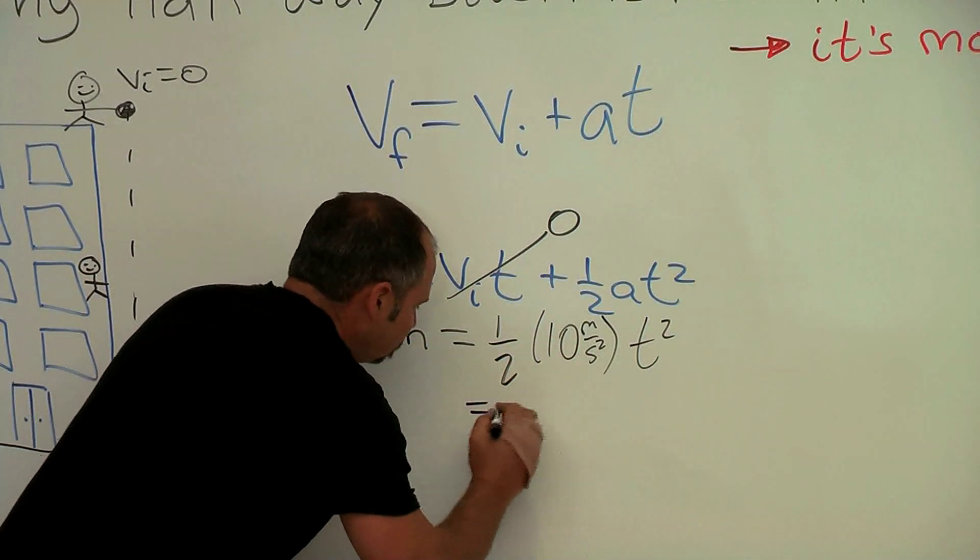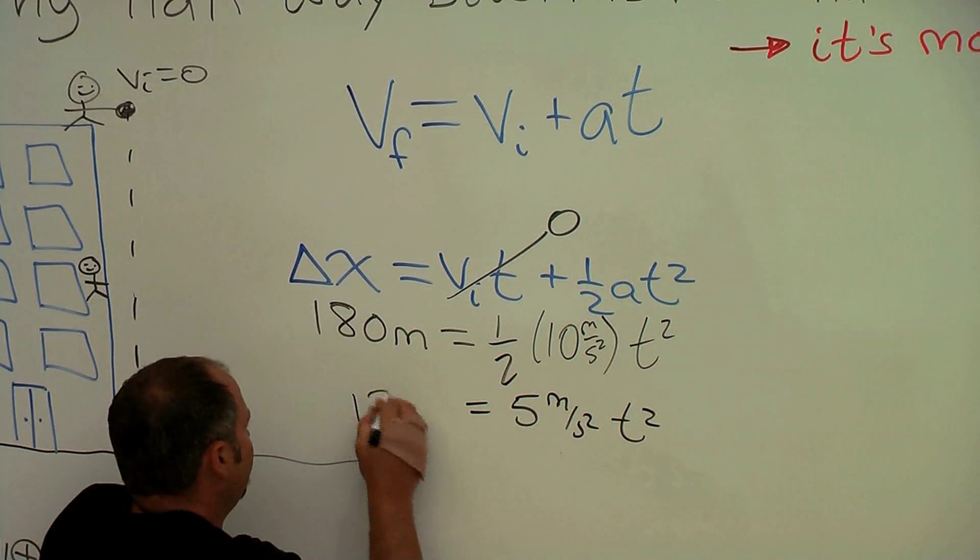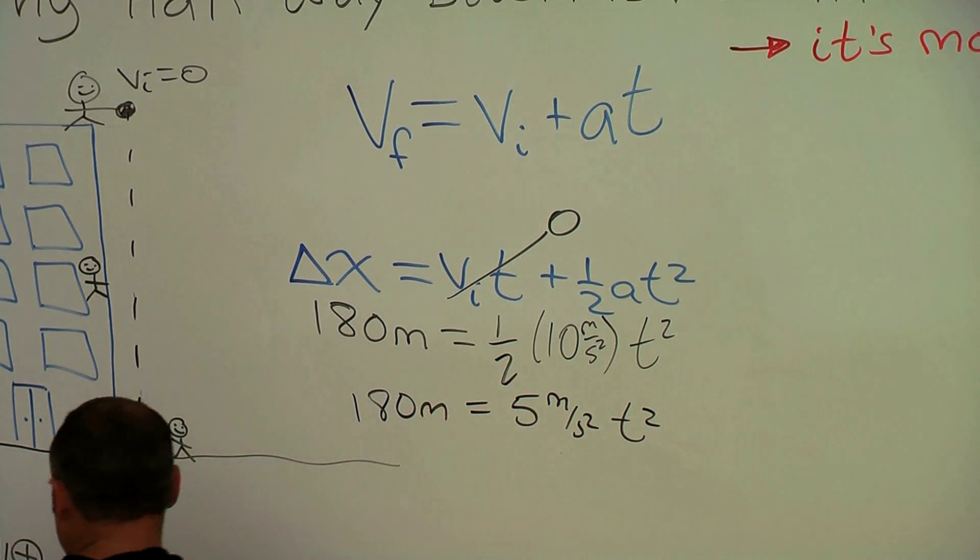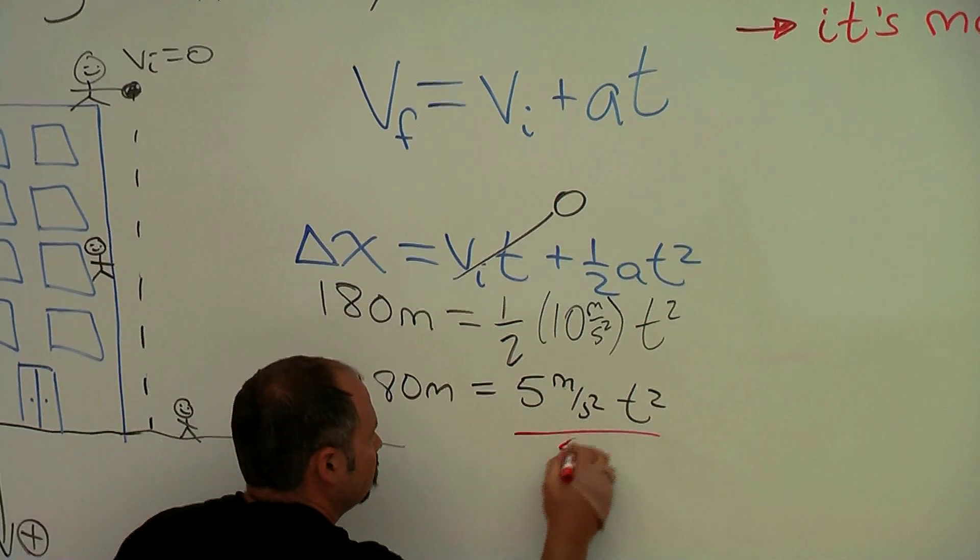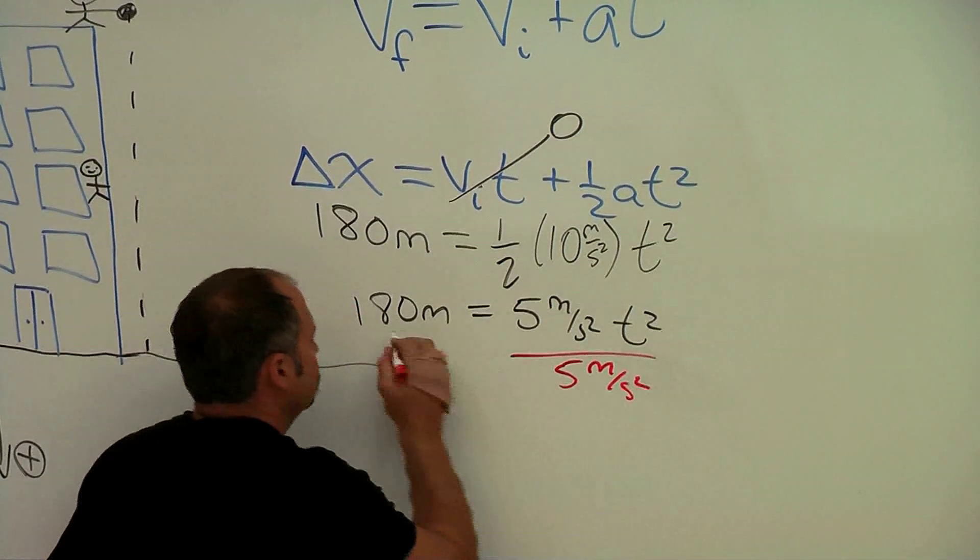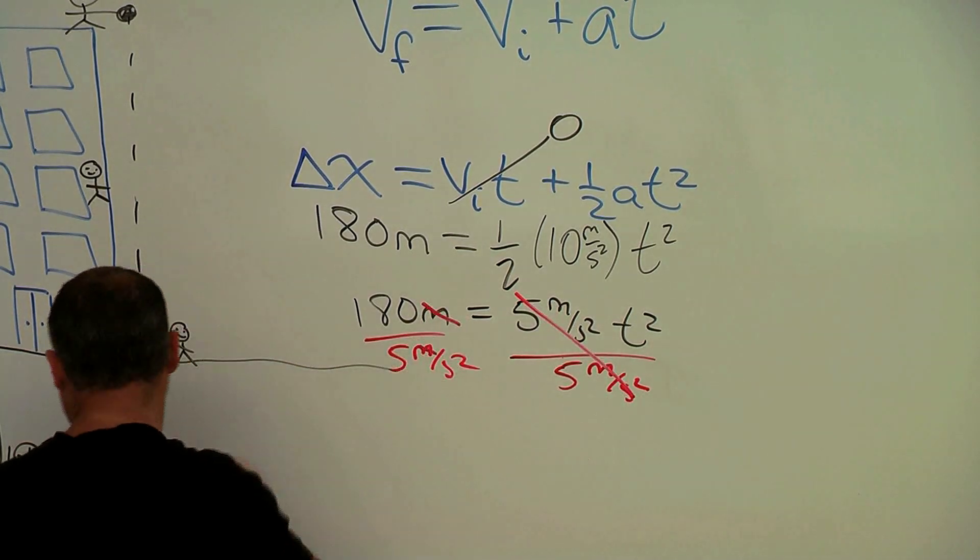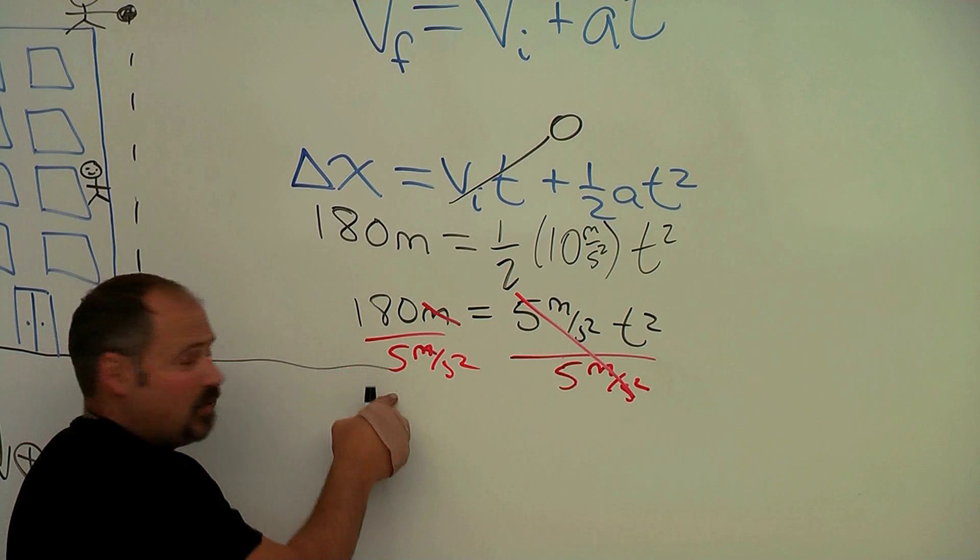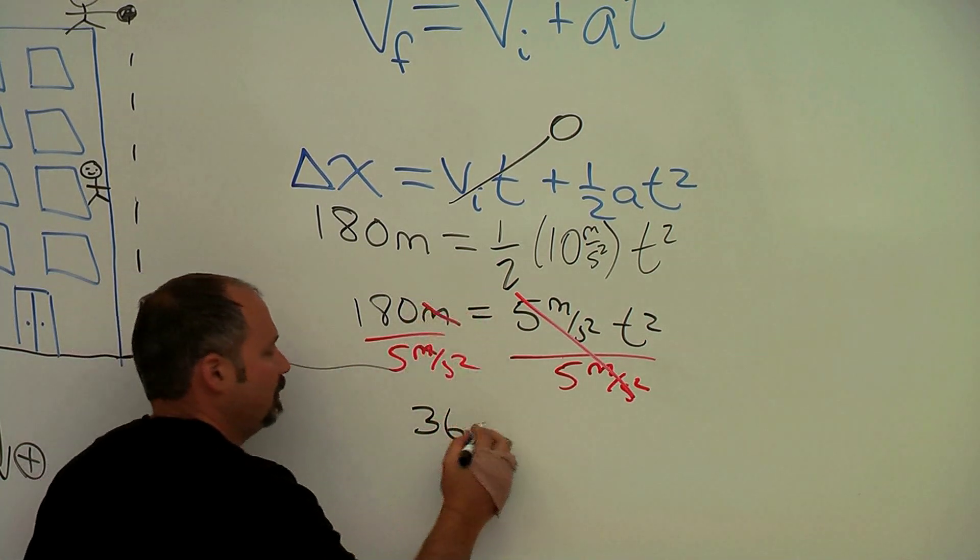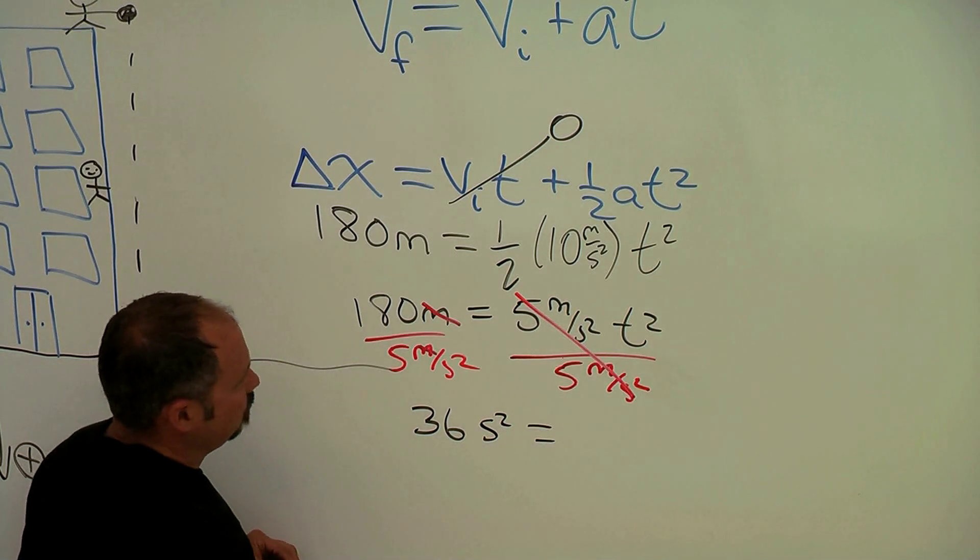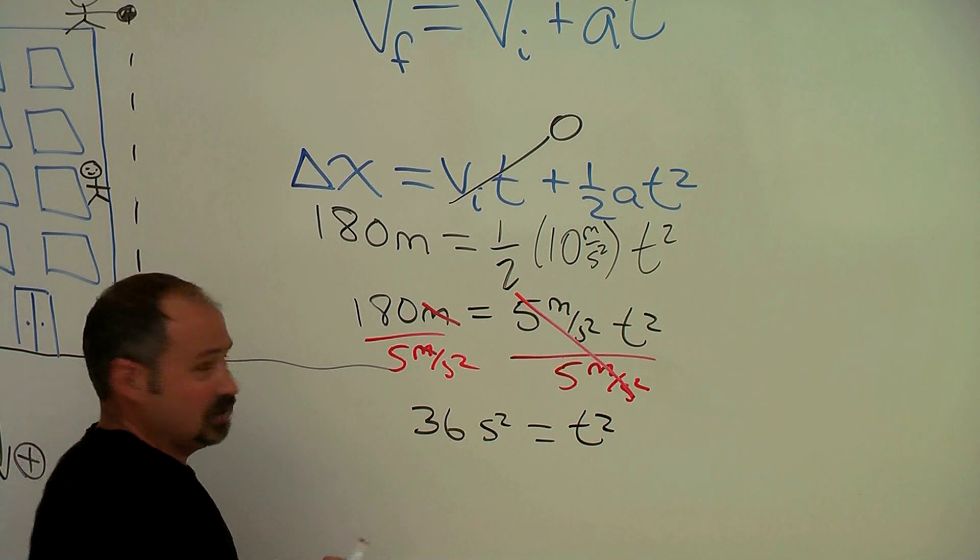One half times ten is just five meters per second squared t squared. That's 180 meters here. I'll divide both sides by the five meters per second squared. These guys cancel, meters cancel, and 180 divided by 5 is equal to 36 seconds squared. That's equal to t squared. Now I take the square root of both sides.